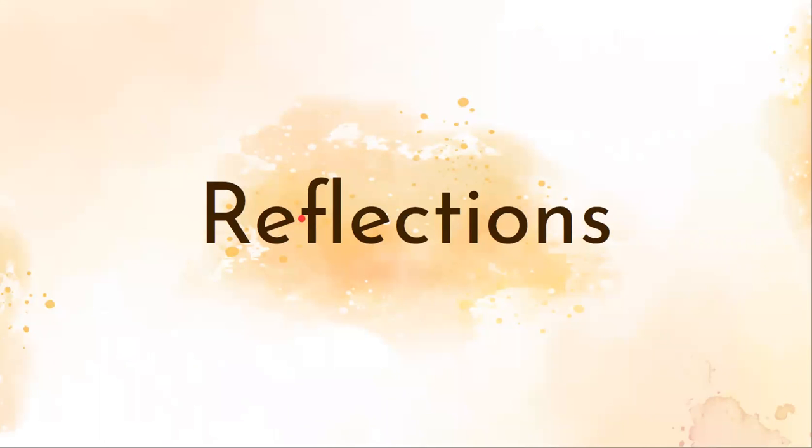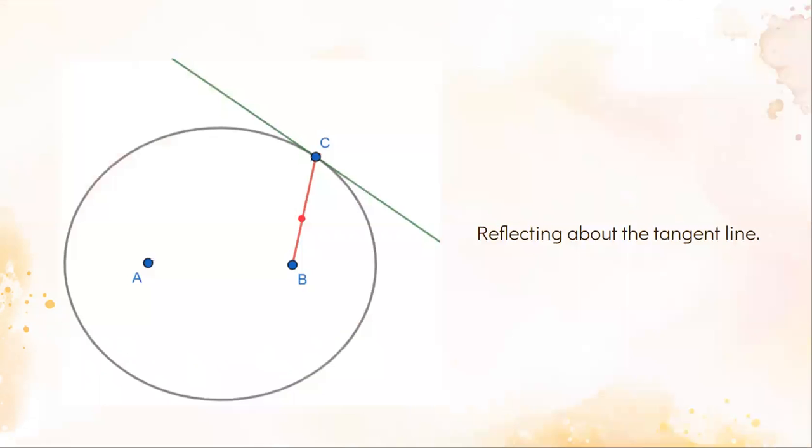First off, we're going to talk about what it really means to reflect off the inside of an ellipse. When we're reflecting off the edge of an ellipse, we're actually bouncing it off the tangent line at that point, which is the green line. But how do we know where this reflection will go?